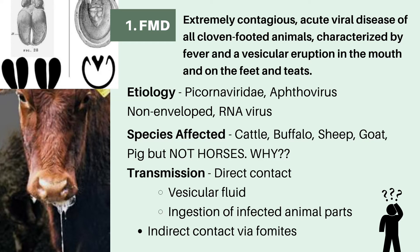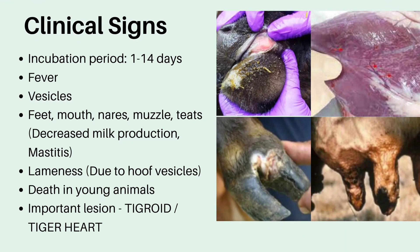Talking about its transmission, FMD can be transmitted through both direct as well as indirect contact. In case of direct contact, it is through vesicular fluid and ingestion of infected animal parts. In case of indirect contact, it is via fomites. Fomites are any inanimate object or material that is likely to carry the infection. FMD virus has an incubation period of 1 to 14 days. Fever is observed, and the most important characteristic is vesicles — fluid-filled pouches or cysts in the feet and mouth.